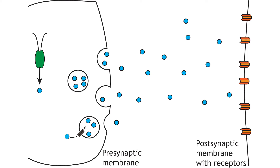There are two main categories of neurotransmitters: small molecule transmitters and peptide transmitters. Synthesis and storage of these neurotransmitter groups differ. Small molecule neurotransmitters are synthesized and stored in the terminal for fast release.